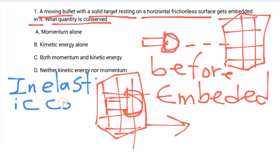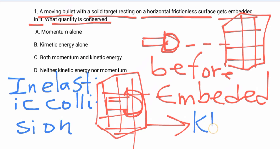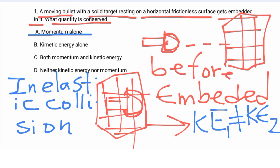When the bullet embeds in the target, some kinetic energy is transformed to potential energy or heat, so we don't call it kinetic energy conserved. The initial and final kinetic energies are not equal. The only thing conserved in an inelastic collision is momentum. So momentum alone is conserved.